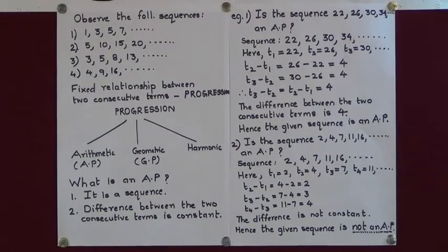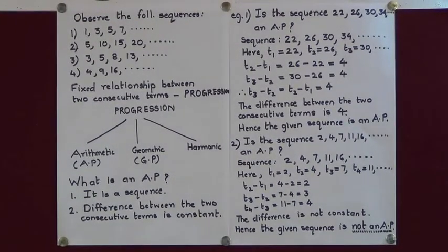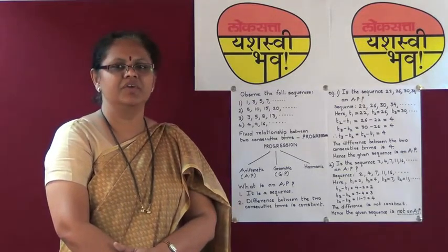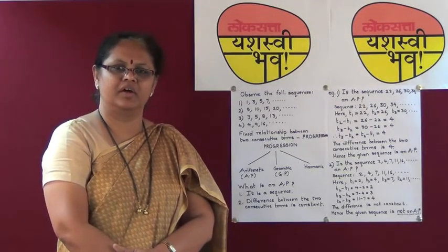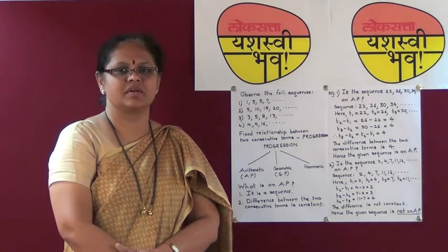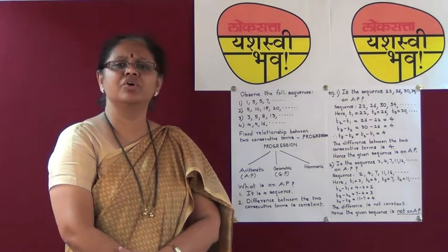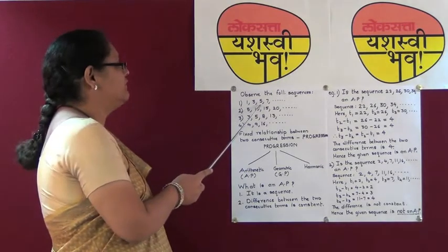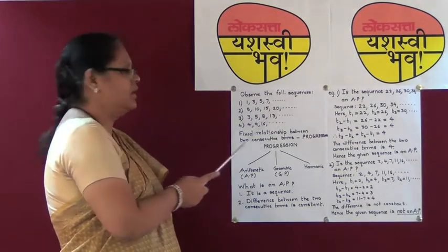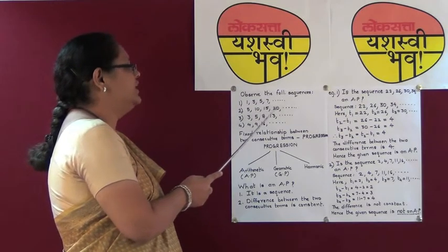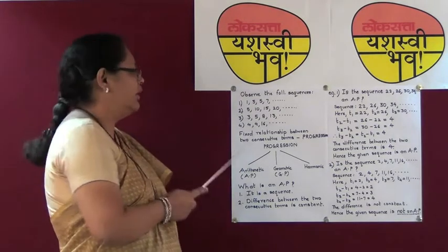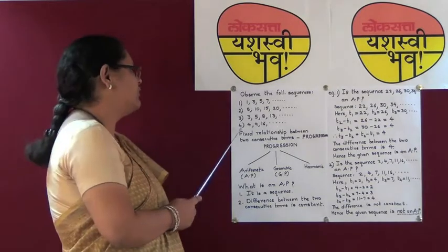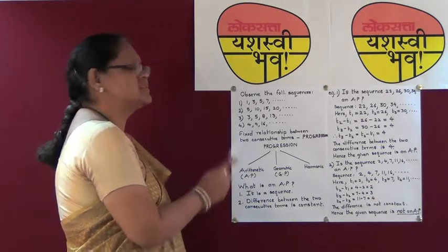I hope students you have understood properly what is a sequence. Now I would like to draw your attention once again to the following sequences: 1, 3, 5, 7 and so on; 5, 10, 15, 20 and so on; 3, 5, 8, 13 and so on; and the fourth sequence 4, 9, 16 and so on.